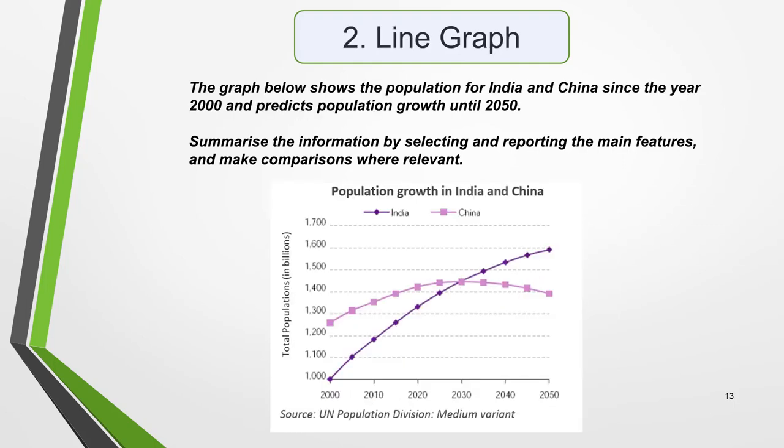Line graphs are also common in Task 1. They're easier to interpret than they may look at first sight, as I show you in the lesson on line graphs. The question for this one is: the graph below shows the population for India and China since the year 2000, and predicts the population growth until 2050. Summarise the information by selecting and reporting the main features, and make comparisons where relevant.